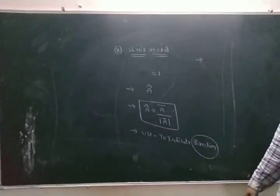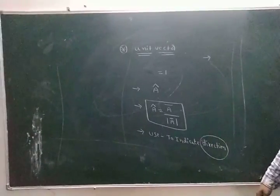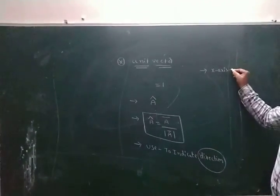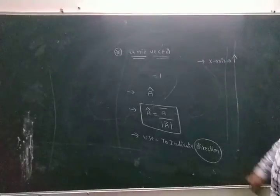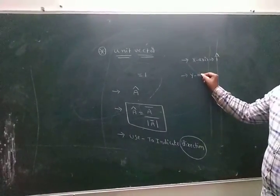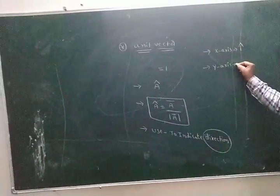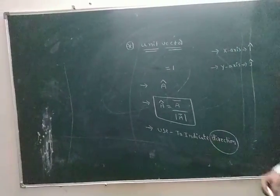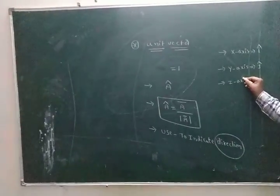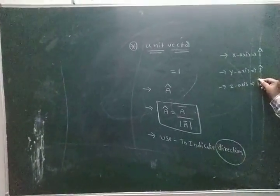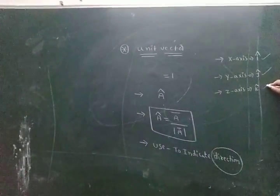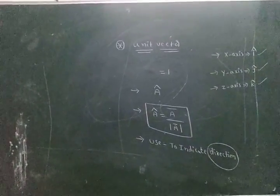To indicate the direction of a body — suppose the body moves along the X axis, the unit vector is represented as î (i_cap). The body moving along the Y axis: unit vector is ĵ (j_cap). The body moving along the Z axis: unit vector is k̂ (k_cap).